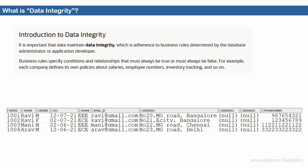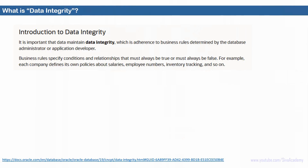Adherence to the business rule is called data integrity. Data integrity is nothing but adherence to the business rules determined by the business users, the developer, or the database applications. There are many different ways by which we can enforce data integrity — whenever we insert or store data inside the Oracle database or any relational database, we want the data to satisfy these rules.